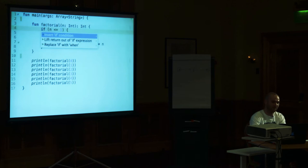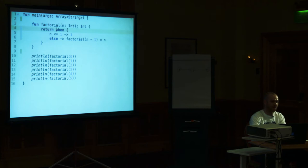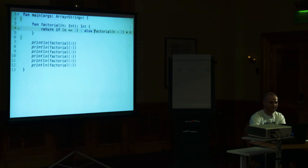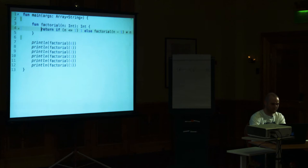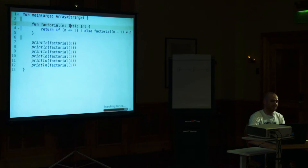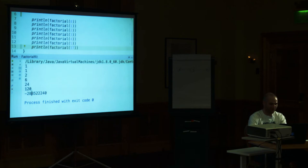In Kotlin, everything is an expression. We can lift `return` out of the `if` statement. There is also a construction called `when`, which is like a Java `switch` but more powerful. The arrow means what will happen in that case. We can also convert to expression body like before. Then obviously for the factorial, you need to run it to make sure it still works. If we go to a larger number like 17, factorial grows really fast and it goes to a negative number — which is definitely wrong.